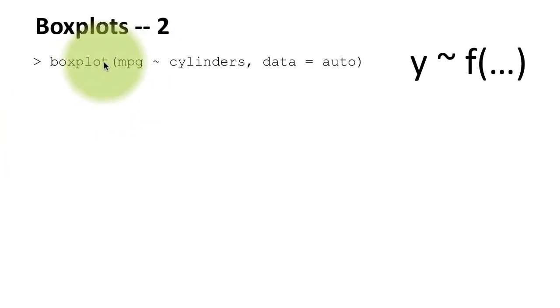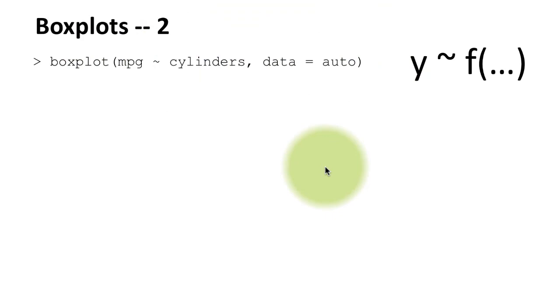And notice also that I used a slightly different syntax for boxplot. Rather than saying auto dollar mpg, auto dollar cylinders, I just said mpg cylinders, and here I said data equals auto. So this is sort of like saying attach auto and then doing this, except that this attach is happening only for this command. Otherwise, the attach will remain attached till you actually detach it. In this case, we are saying, for the purpose of this command, look for everything that I am talking about in this data frame called auto.